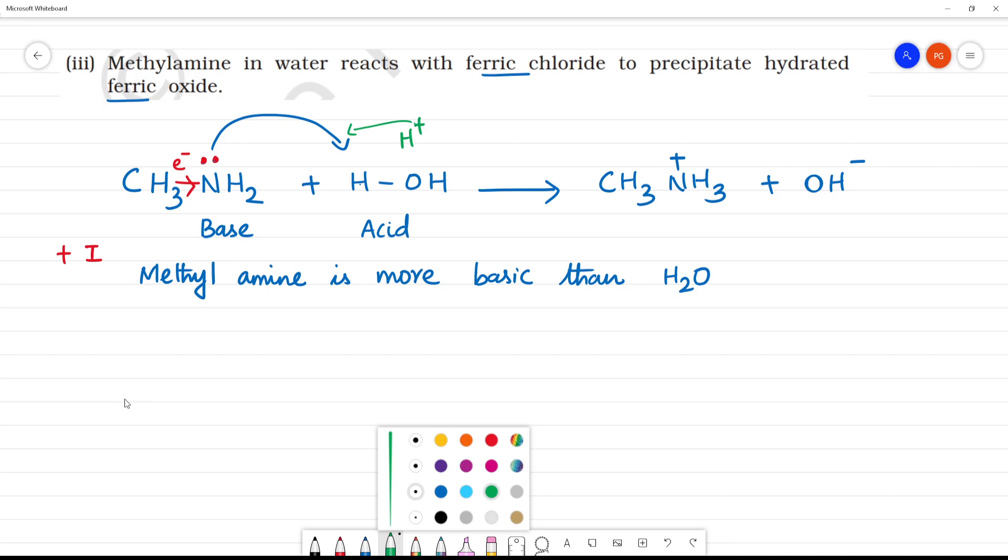It's ferric chloride. What is ferric chloride? FeCl3. We know that FeCl3 can be written as Fe3+ plus 3Cl-.